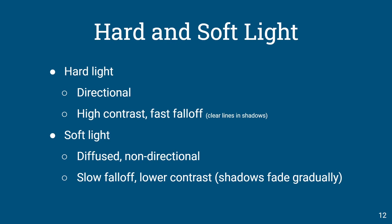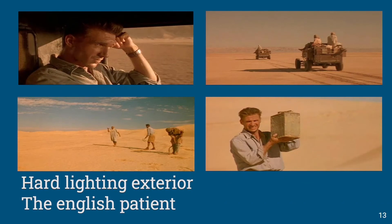We have different degrees of light. Hard light is directional — it has high contrast and fast falloff, which gives a clear line in shadows. Soft light is diffused, meaning the light goes through some source to scatter it and not make it so directional — not like a spotlight, but a soft, flowing kind of light with lower contrast. Here's hard lighting in an exterior — that high noon look — with very clearly defined, hard shadows throughout. It seems very directional where it's coming from.